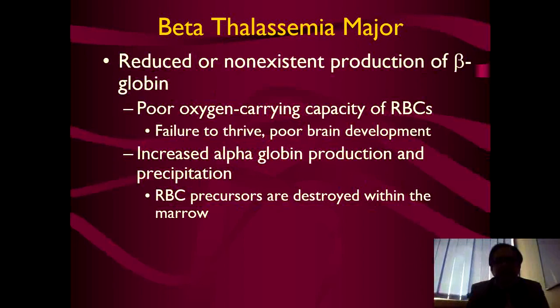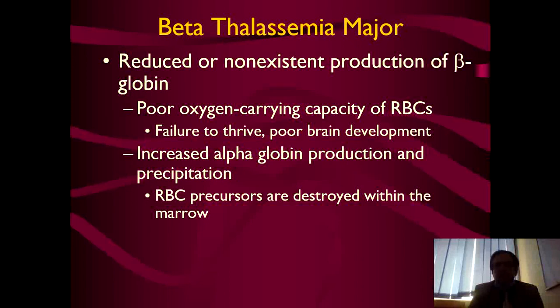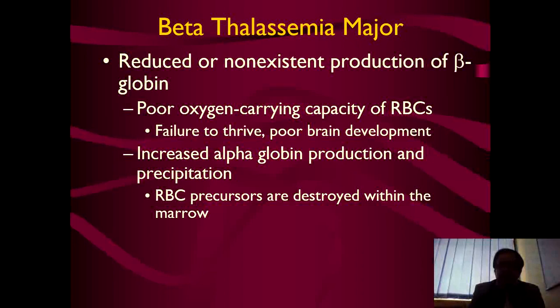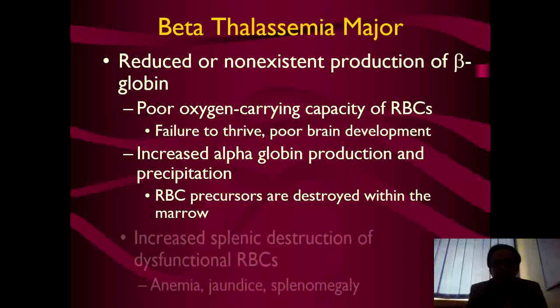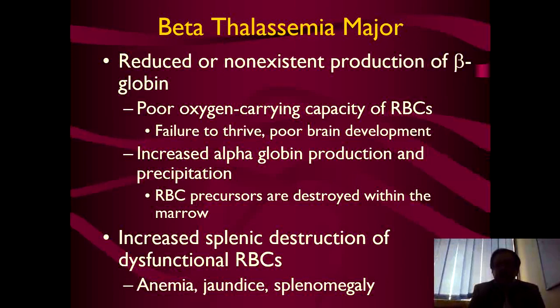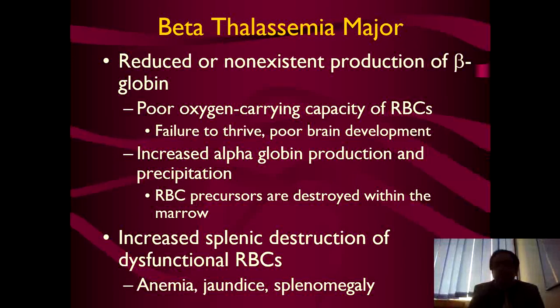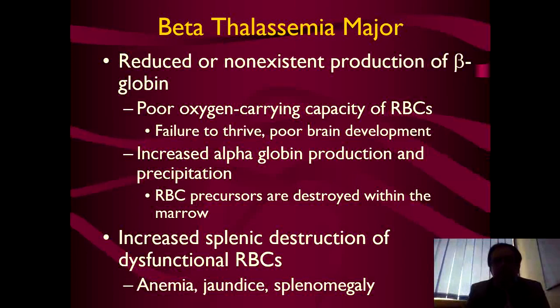In beta thalassemia major there is reduced or non-existent production of beta-globins, resulting in poor oxygen-carrying capacity of RBCs. Children fail to thrive, may have poor brain development and mental retardation. There is increased alpha-globin production and precipitation, and RBC precursors are destroyed within the marrow. Increased splenic destruction of dysfunctional RBCs leads to the classical triad of anemia, jaundice, and splenomegaly. If you find these three features together, clinch the diagnosis of beta thalassemia major or Cooley's anemia.